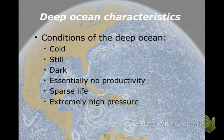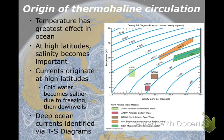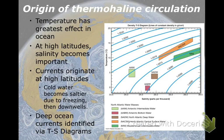Most of the organisms that live in the deep ocean have to deal with very high pressure. There's a temperature-salinity diagram in the book — take a look at it. In the boxes are the characteristics of those particular water masses.